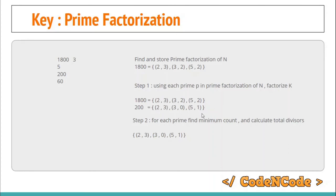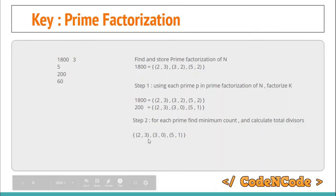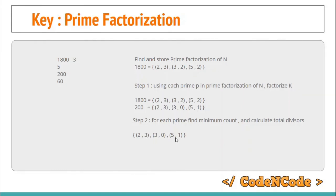So the overall complexity to calculate the common divisors between N and K is O(log²N): the prime factorization of K using N's primes takes O(log²N), and calculating the total number of divisors from the exponents takes O(log N). Therefore the dominant term is O(log²N) per query.